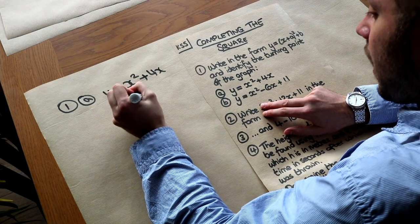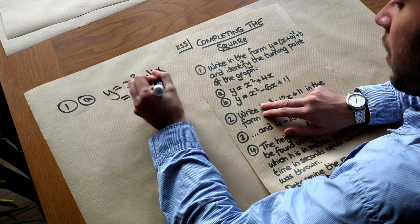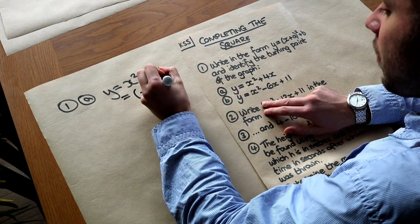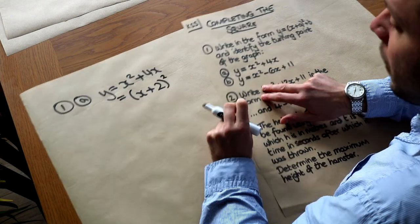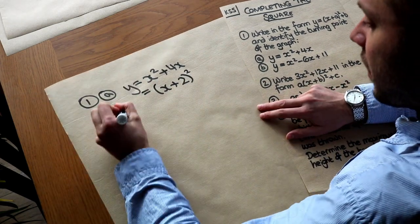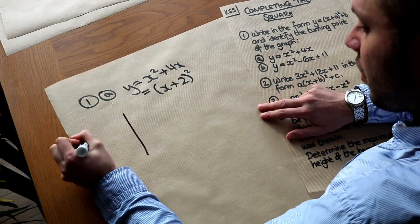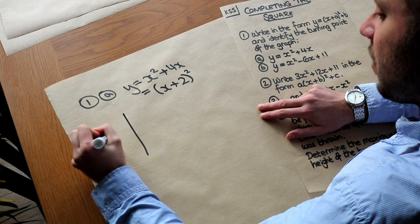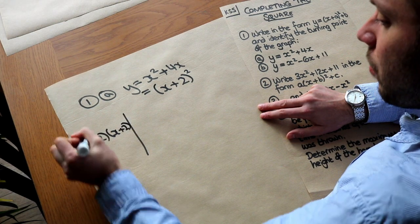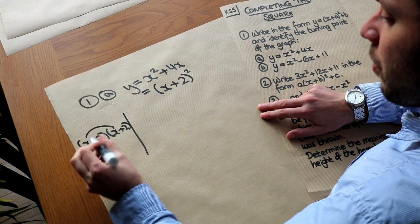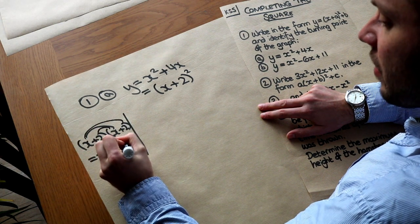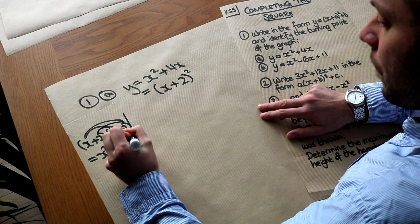The way you do it is to halve the coefficient of x, so we get x plus 2, and then square that bracket. If we expand x plus 2 times x plus 2, we get x squared, then 2x and another 2x which is 4x, and the plus 4.